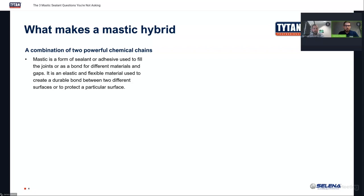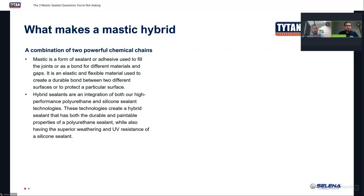Hybrid sealants — like the mastic hybrid we're about to get into — are an integration of both high-performance polyurethane and silicone sealant. We're combining two different base chemical chains into one, and that's where the hybrid comes in. Both bring very unique attributes to this mastic hybrid sealant product.